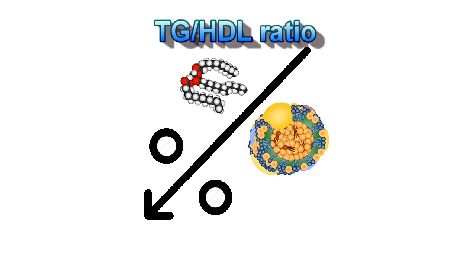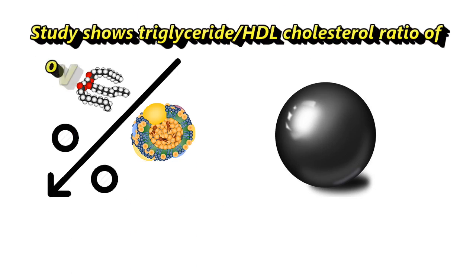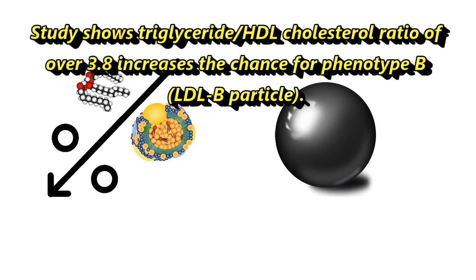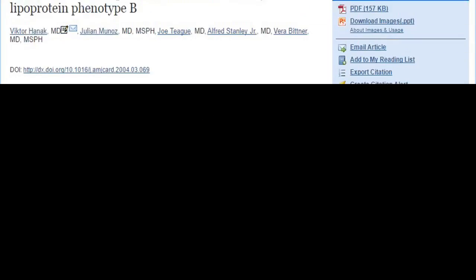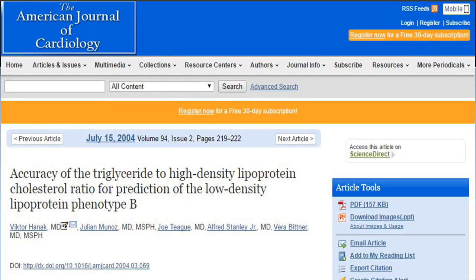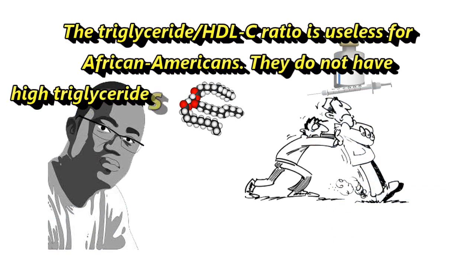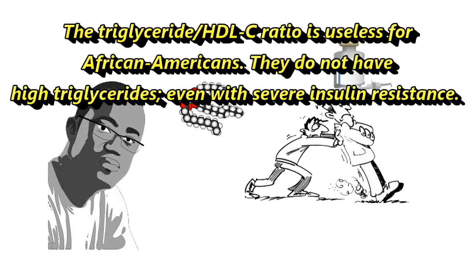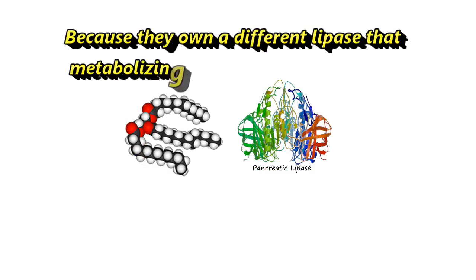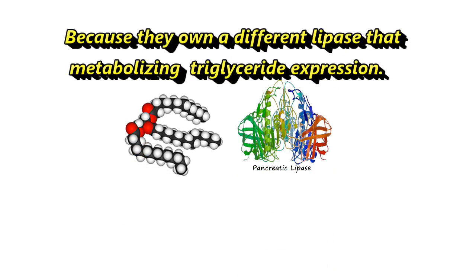TG to HDL ratio: studies show a triglyceride-to-HDL cholesterol ratio over 3.8 increases the chances of LDL pattern B particles. Reference: "Accuracy of the triglyceride to high-density lipoprotein cholesterol ratio for prediction of low-density lipoprotein phenotype B," published in the American Journal of Cardiology, Volume 94, Issue 2. Notably, the TG-to-HDL cholesterol ratio is useless for African Americans, as they do not have high triglycerides even with severe insulin resistance, because they possess a different lipase that metabolizes triglyceride expression.